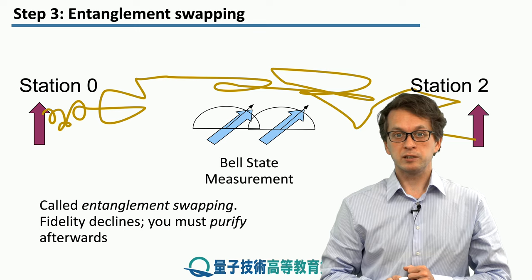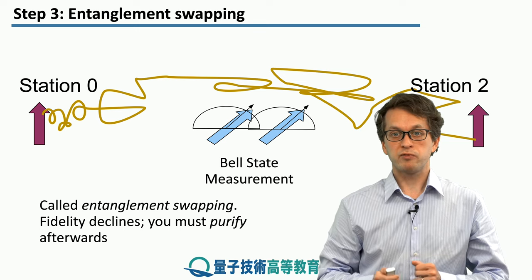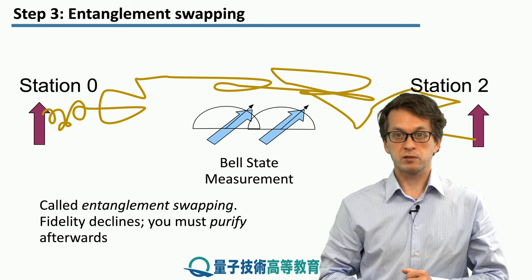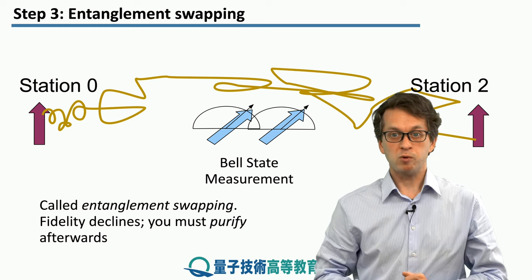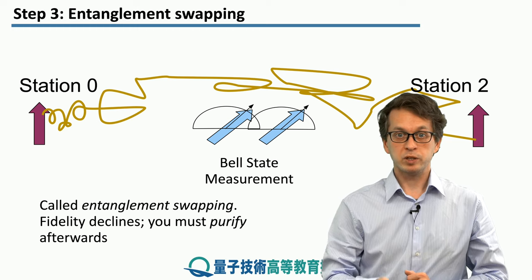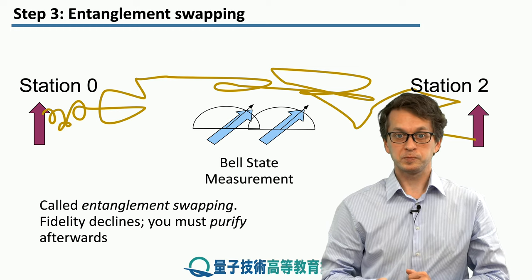In the next step we will address the question of how to handle errors and purify noisy results in order to obtain better quality states between station 0 and station 2.